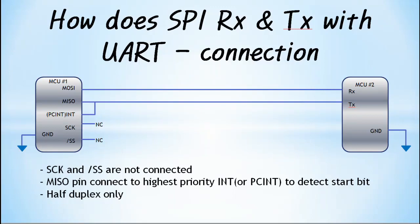In the previous video, we showed the source code and actual operation of outputting to a UART device using SPI. Theoretically, the signal from UART is received using SPI. Now let's look at how to make bidirectional communication between SPI and UART devices.